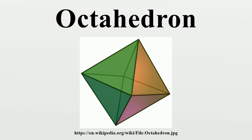Additionally, the inertia tensor of the stretched octahedron reduces to the equations for the regular octahedron. Geometric relations: the interior of the compound of two dual tetrahedra is an octahedron, and this compound, called the stella octangula, is its first and only stellation.